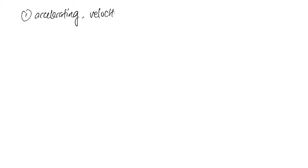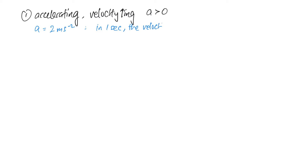In layman terms, accelerating means the velocity is increasing — or the speed increases in a straight line, meaning the car is moving in a straight line with no change in direction. So the acceleration will be greater than zero, which is positive. For example, if the acceleration of the car is 2 meters per second squared, in layman terms that means in one second the velocity — or speed — of the car increases by 2 meters per second.